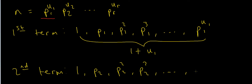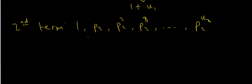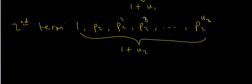The second term could be p2 cubed, and so on up to p2^u2. If we count the number of possible choices — 1 through u2 plus the possibility of just having 1 — the total number of choices for the second term is 1+u2. So there are 1+u1 choices for the first term and 1+u2 choices for the second term.